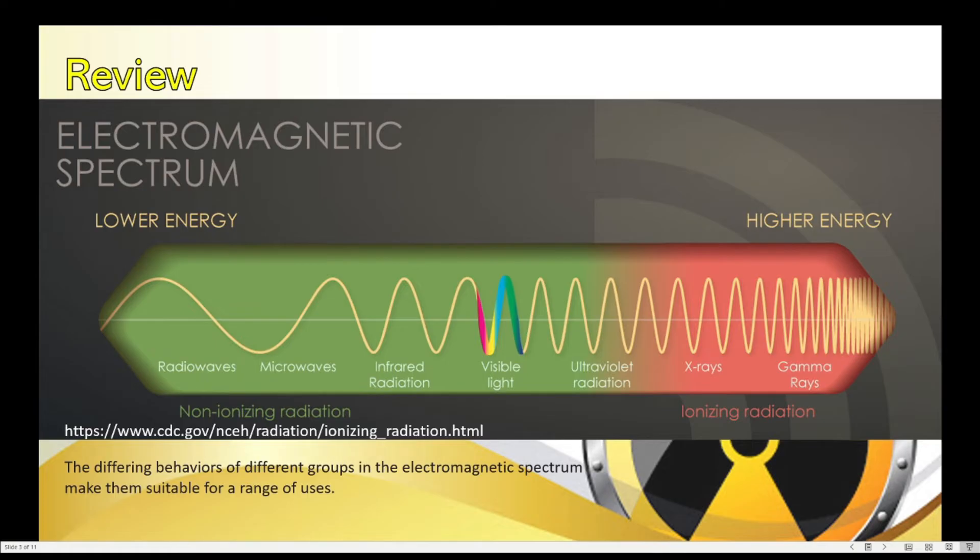we can see that the ionizing radiation towards the rightmost end of the electromagnetic spectrum is colored red. It encompasses a part of ultraviolet radiation, X-rays, and gamma rays. So this means that these types of electromagnetic waves have higher energy and therefore, if you are overexposed to these types of electromagnetic waves, it can cause harm to your health.